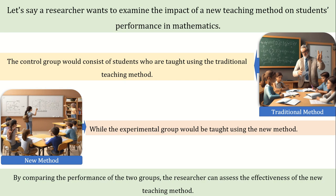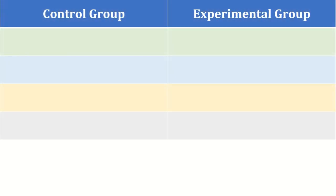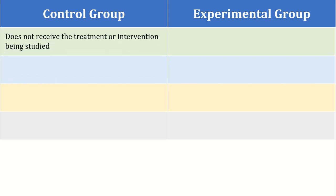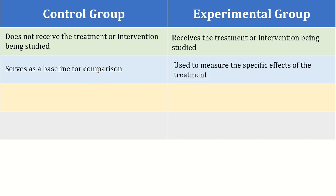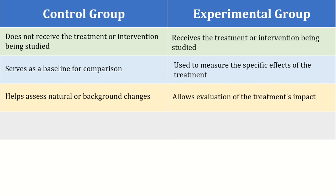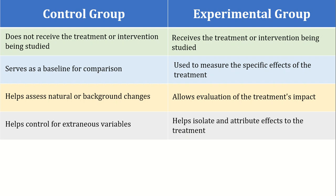Next are some core differences between a control group and an experimental group. A control group does not receive an intervention, while the experimental group receives the intervention. Secondly, the control group serves as a baseline for comparison, while the experimental group is used to measure the specific effects of the treatment. Thirdly, the control group helps assessing natural changes, while the experimental group evaluates the intervention's effects. At number four, the control group helps controlling the extraneous variables, while the experimental group helps isolating and attributing the effects to the treatment.